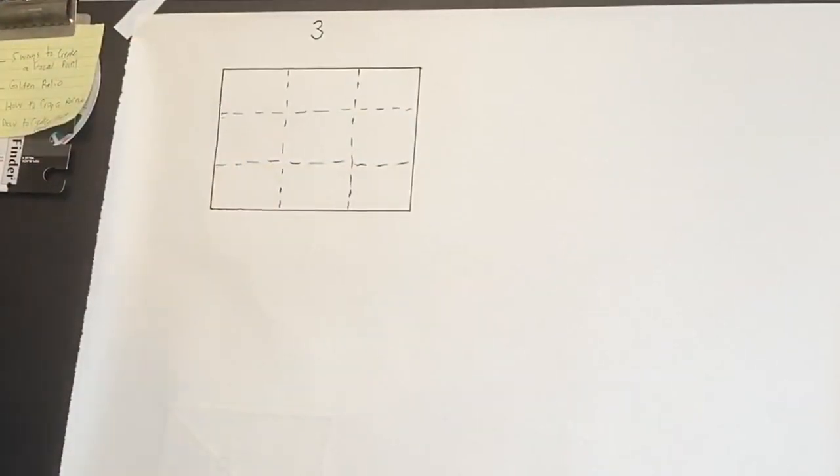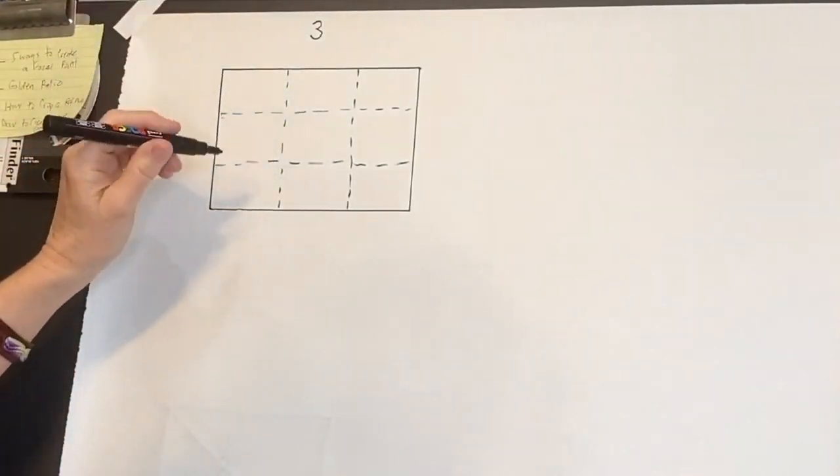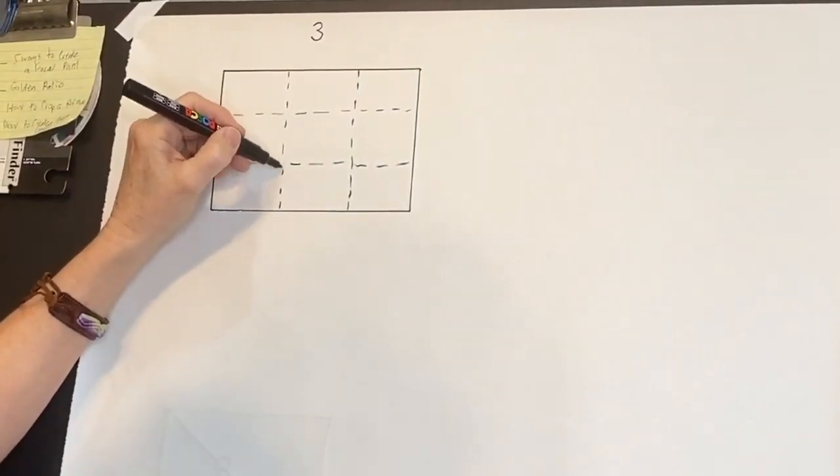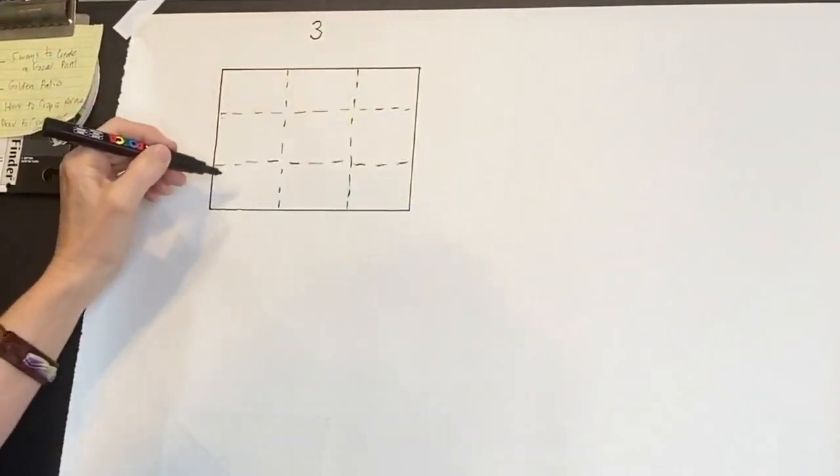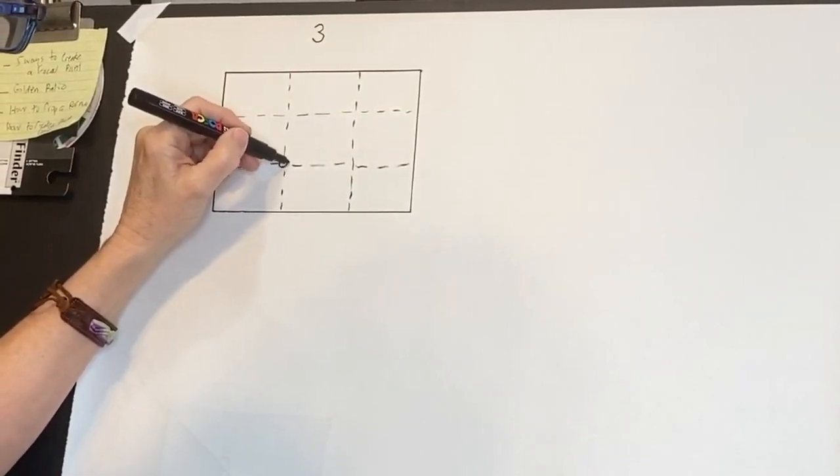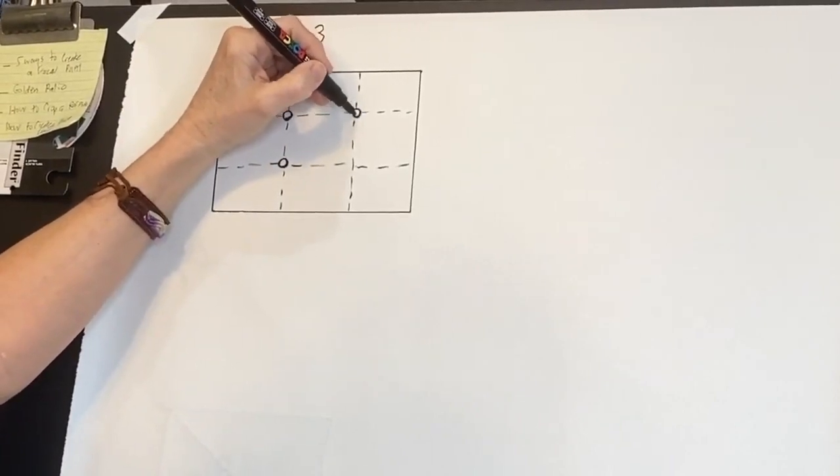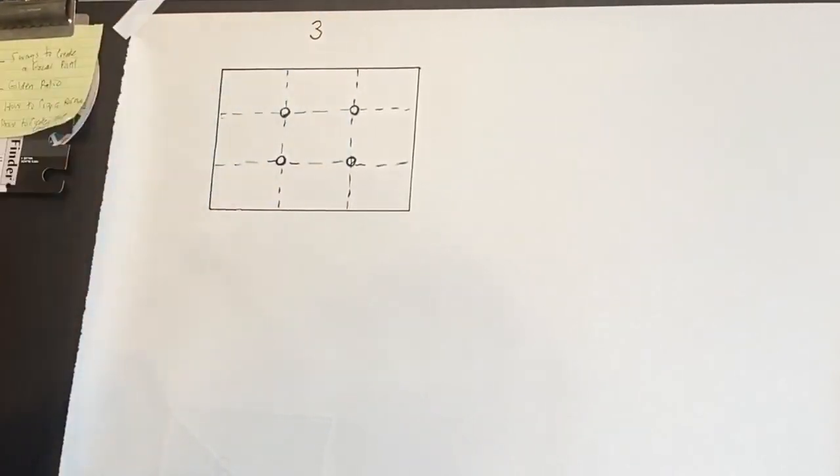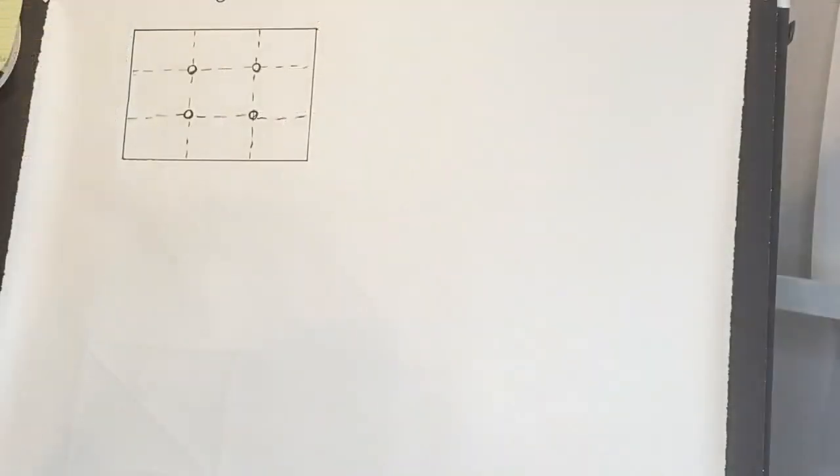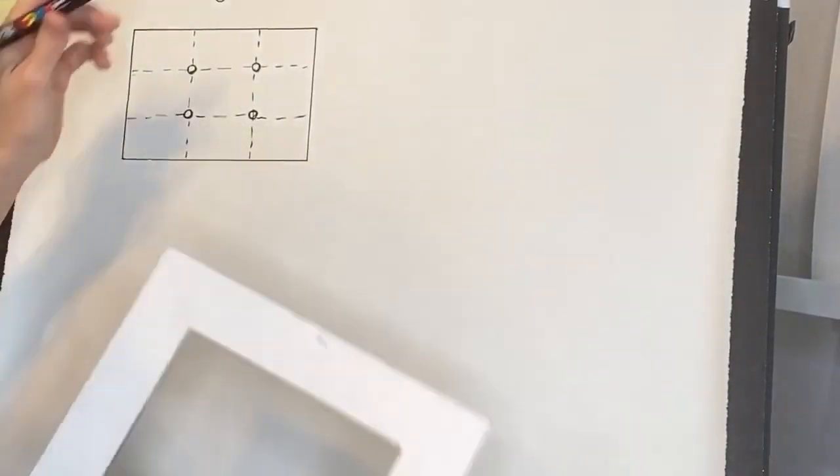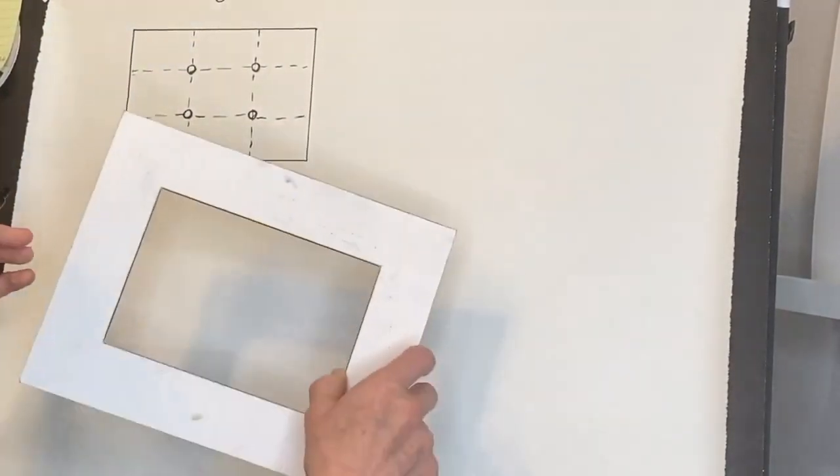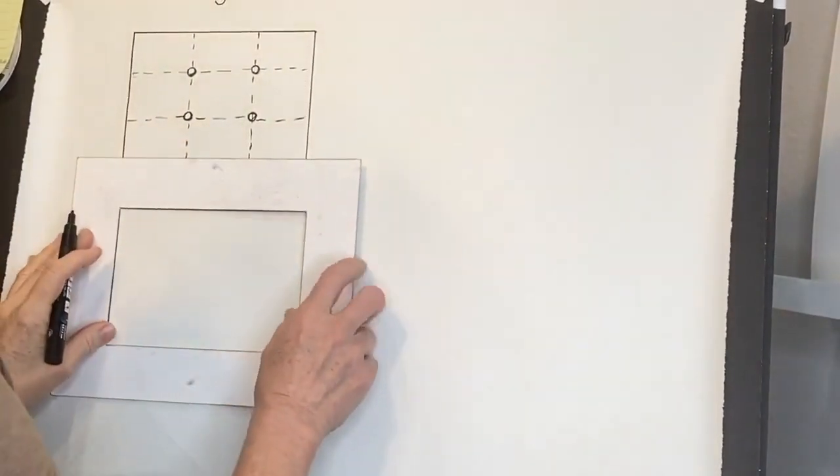Now the best place, typically these are just basic rules, to put a focal point is in these sections of your third lines, where they intersect. So here, here, here, and here. I'm gonna give just a couple examples of points that are not done this way and I think you can probably pretty quickly see that they don't feel right. It's kind of a natural thing that we have.